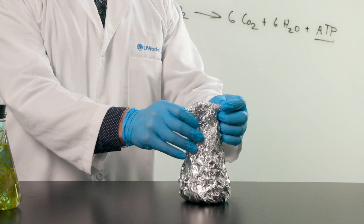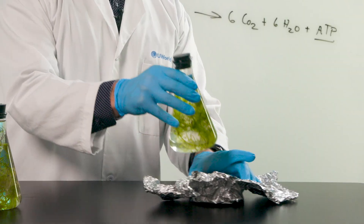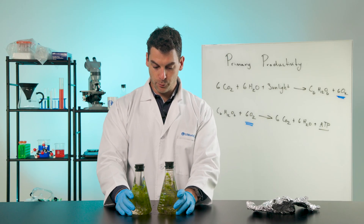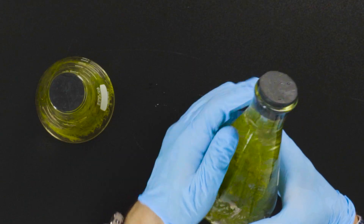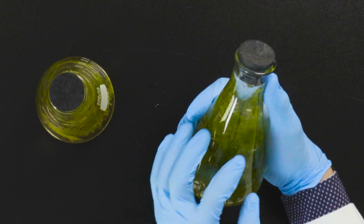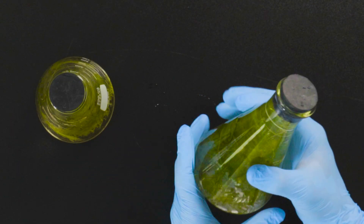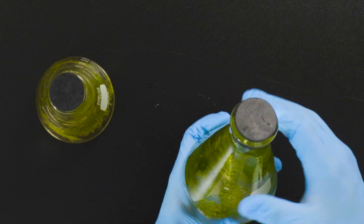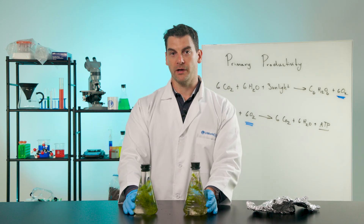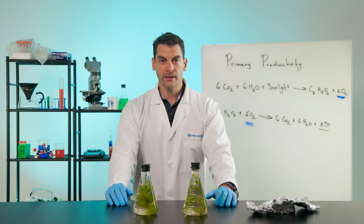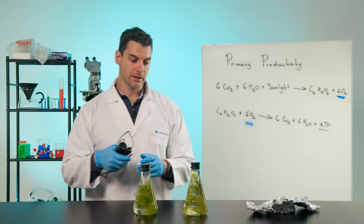Now looking at our dark condition flask, it looks pretty similar but noticeably flatter with no visible bubbles — which makes sense because photosynthesis didn't happen. The only process occurring in the dark condition flask was respiration. To really figure out what happened and to measure NPP and GPP, we need to take the dissolved oxygen content of both flasks.